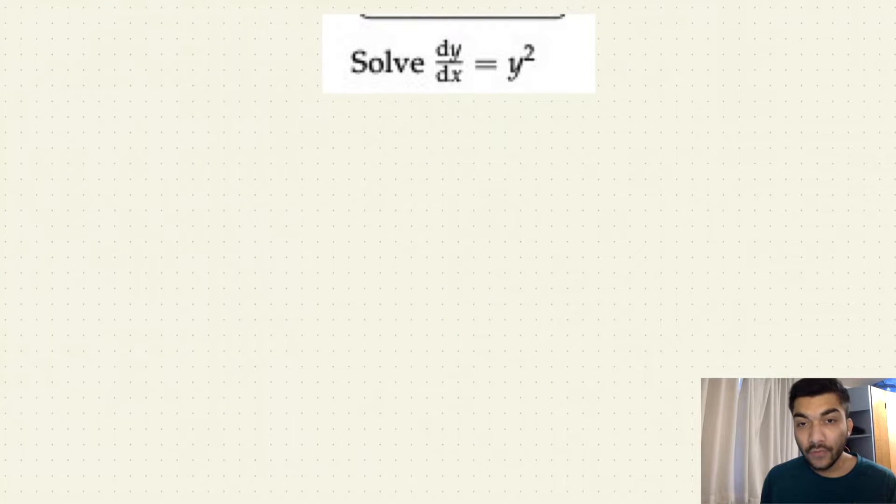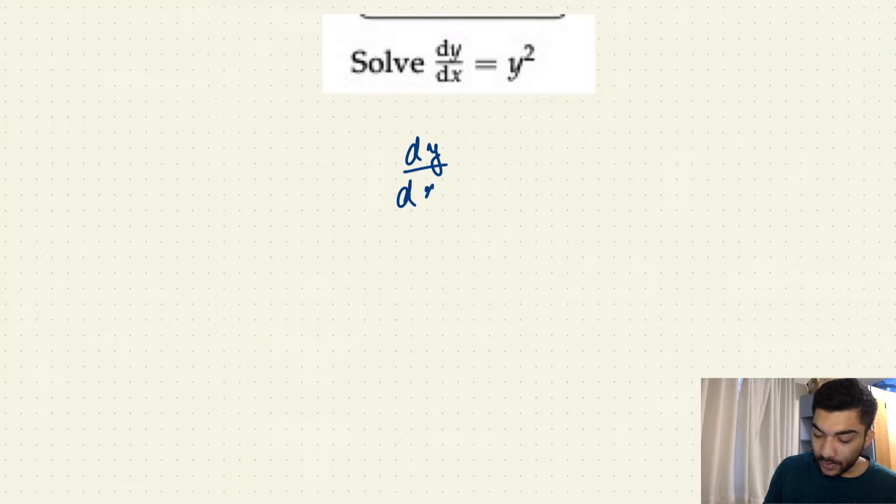Now you know that you can easily separate the similar variables on one side. So dy/dx = y². If I move the y² over here and dx to the other side, we can separate these similar variables on one side, so it will basically be dy upon y² equals dx.